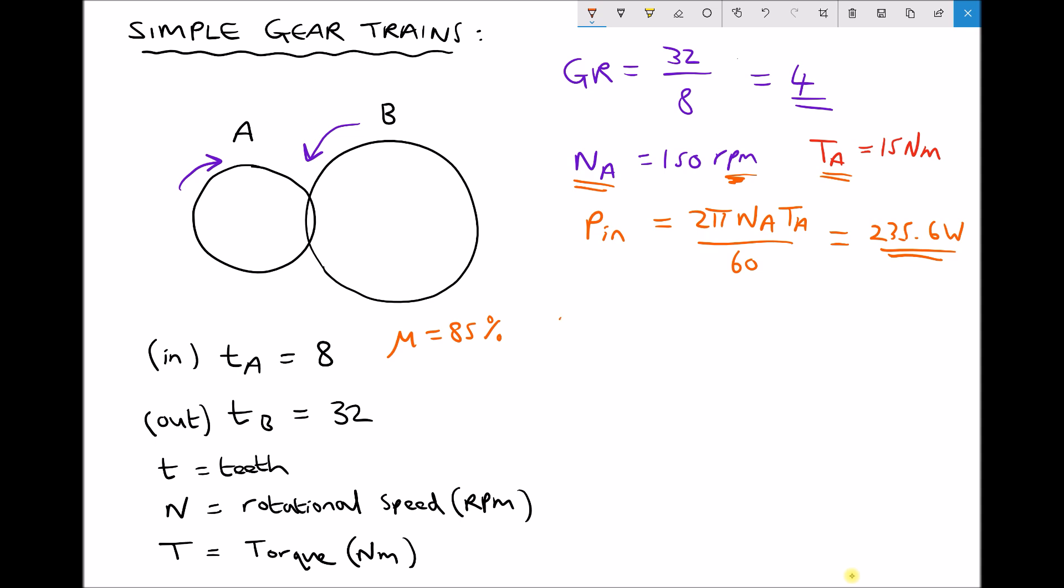We have a formula which states that the efficiency is P out over P in, which means that P out is the efficiency times P in.